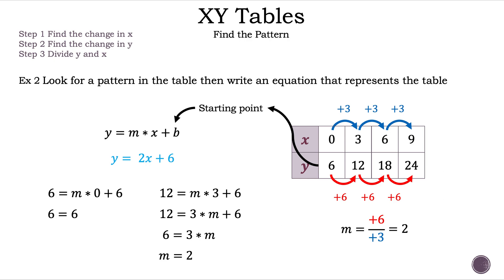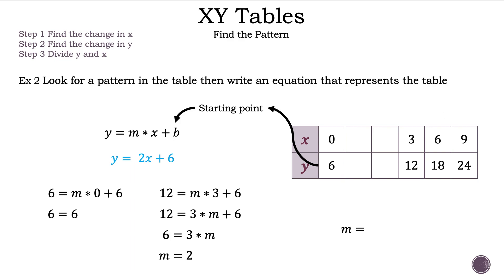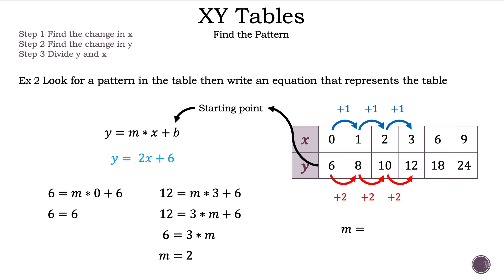Before we move on to your turn, let's expand our table a bit so we can see another reason why our slope is 2. Let's go backwards from 3 to 2, which means our Y value for 2 is 10. Let's go backwards from 2 to 1, which means our Y value for 1 is 8. If we count the change in X after each new value for the first four terms, it is plus 1. And if we count the change in Y after each new value for the first four terms, it is plus 2. And remember, M is equal to the rate of change of Y over the rate of change of X, which is positive 2 over positive 1, which is 2. And if we added all the integers between 3 and 9 to the XY table, the rate of change would be the same.